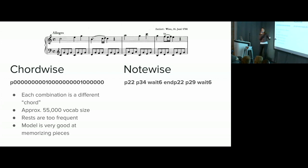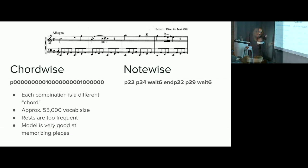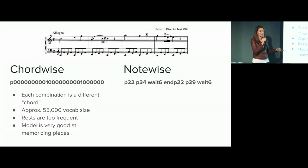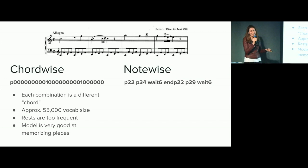Across classical music, you end up with something like 55,000 tokens. The trouble I ran into with this is the model handled it really well, except that it got really good at memorizing things. So I accidentally memorized all of classical music, which was kind of cool but not helpful for generating new pieces.